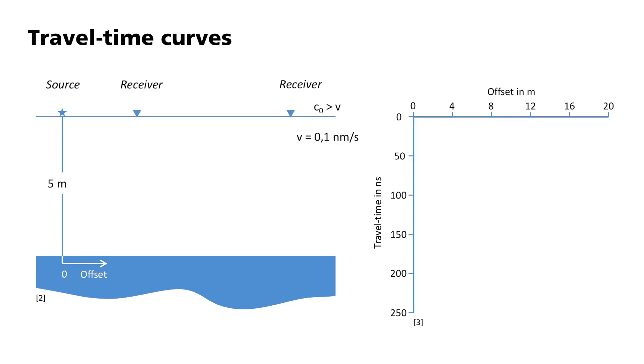Here you can see the typical propagation pathways of radar waves, where there is a layer above a half-space and next to it you can see its associated travel time diagram. The direct wave and the reflected wave you already know from the field of seismics. In addition, GPR is also associated with additional pathways that are of no significance in seismics.